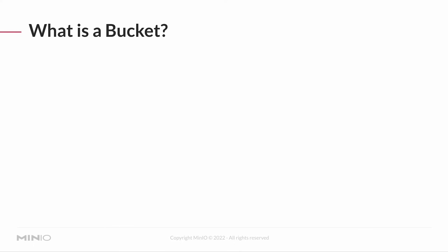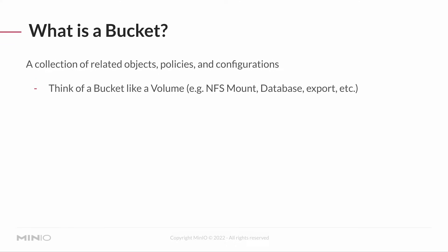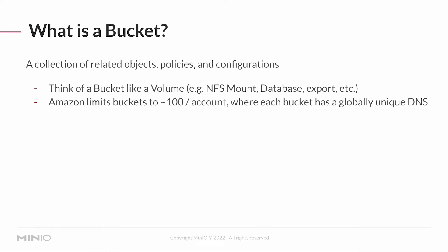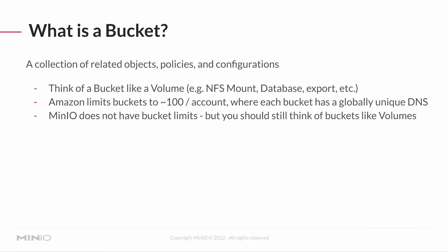So what is a bucket? A bucket is where you store your blobs. It's a collection of related objects, policies, and configurations — similar to a volume in many ways. You can think of how you've mounted a database or an NFS mount. As a developer, my hard drive is my bucket. Amazon S3 limits you to basically 100 buckets per account, and each bucket has a globally unique DNS. MinIO implements that same thing, but you do not have bucket limits.